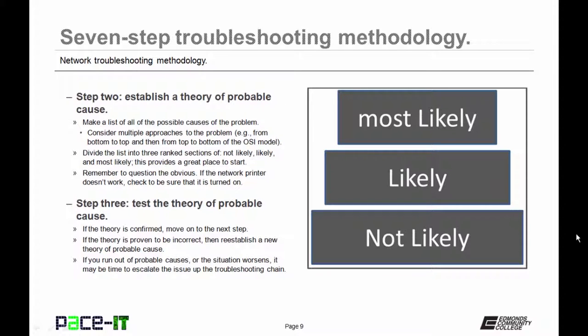Step two is to establish a theory of probable cause. Make a list of all of the possible causes of the problem. To develop this list of possible causes, you should consider multiple approaches to the problem. From bottom to top, and then from top to bottom of the OSI model. That is a great way to approach the problem from multiple directions. Divide your list of possible causes into three ranked sections. They should be not likely, likely, and most likely. This will provide a great place to start.